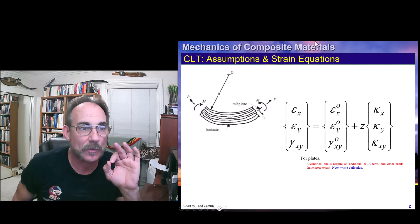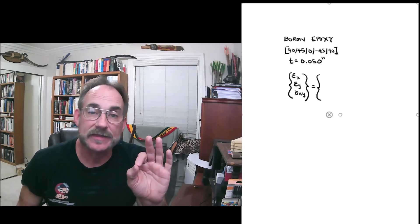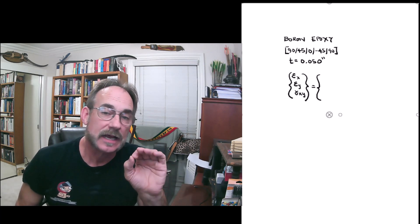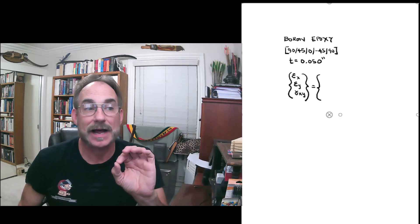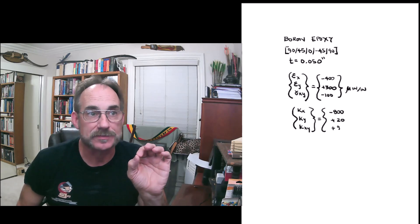So let's go ahead and look at an example of how this works. We have a boron epoxy with five plies: 90, plus 45, zero, minus 45, as seen here. Thicknesses of all plies are 0.050, and this laminate is subjected to mid-plane strains and curvatures. We're going to show what those strains and curvatures are in body coordinates. The body coordinate mid-plane strains and curvatures are given as shown.